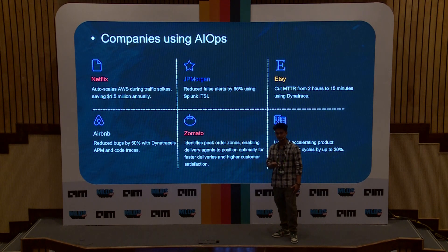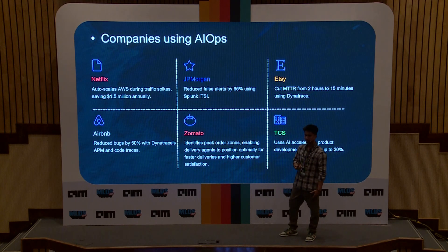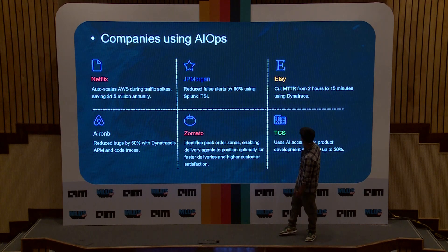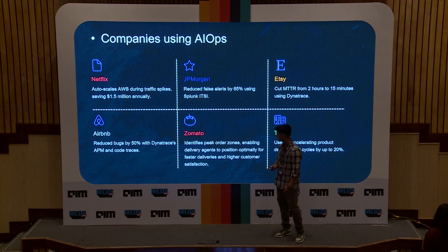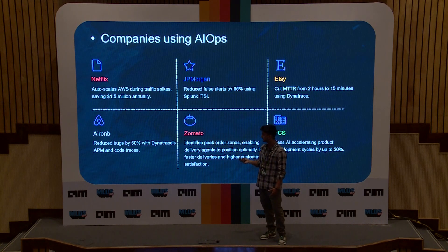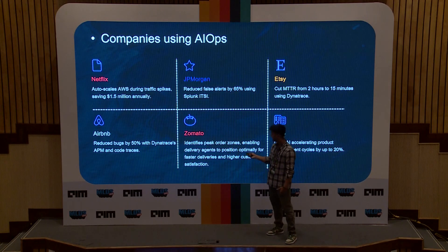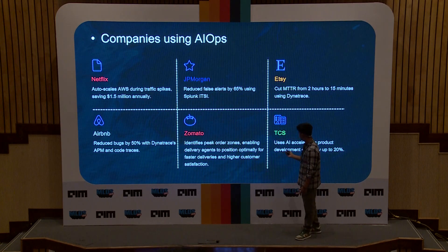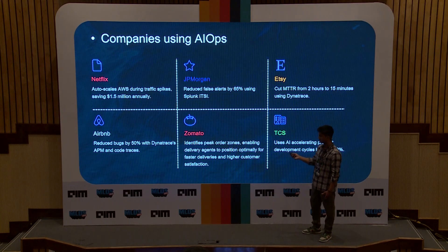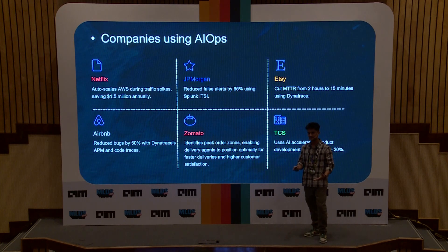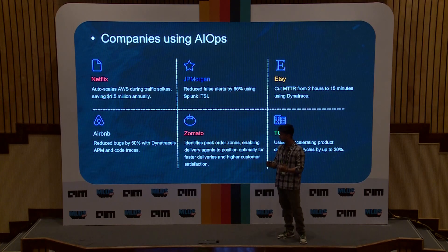Then we have Etsy, which uses AIOps to reduce their mean time to resolution from 2 hours to 15 minutes using Dynatrace. Dynatrace is an observability tool. Similarly, Airbnb uses Dynatrace to reduce bugs. Zomato, an Indian brand, uses AIOps to place their delivery agents at the right spots to enable faster deliveries. Lastly, TCS uses AI to accelerate their product development by 20%. This is not the future — it's something happening today, and companies should be adopting AI for their applications.